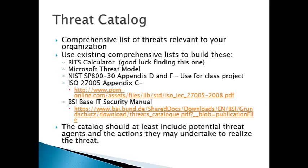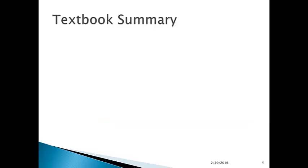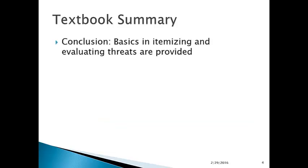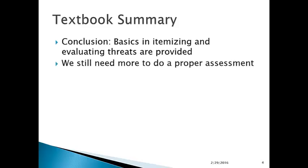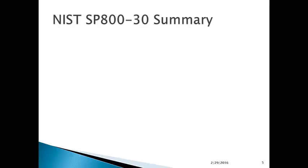Your threat catalog should at least include potential threat agents — meaning the actors behind the threats — as well as the actions they may do to realize the threat. The textbook conclusion is it does provide you the basics in itemizing and evaluating threats, but we still need more to do a proper assessment. So let's look at NIST SP-830.